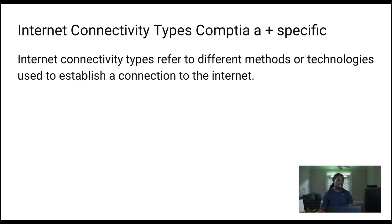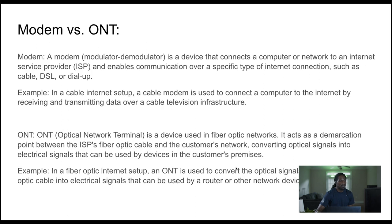Back to internet connectivity types. Internet connectivity types refer to the different methods or technologies used to establish a connection to the internet. It's pretty straightforward — everybody knows what the internet is and everybody's pretty much going to know what these types of connections are.